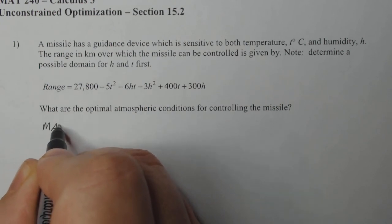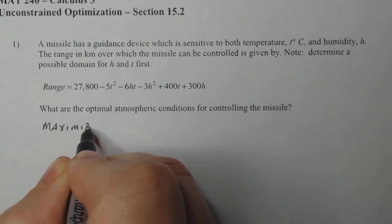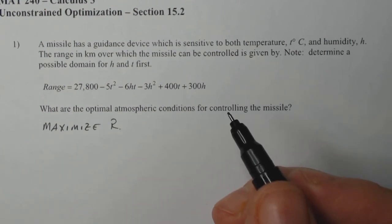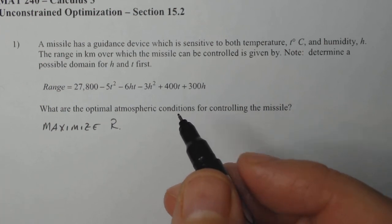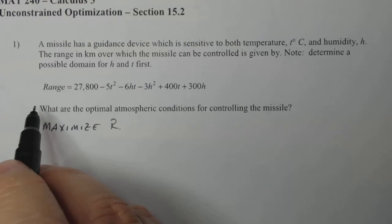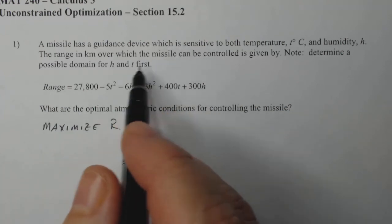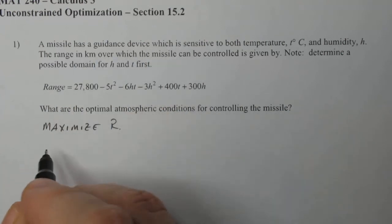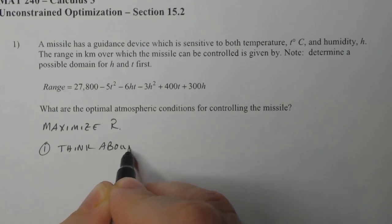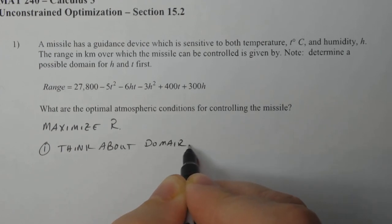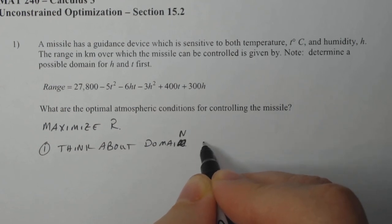All right, so we want to maximize R. In order to find the maximum R, we do have to have critical points and endpoints. And since we don't have a constraint, it is a good idea to talk about a possible domain that can be restricted by our context. So step one, let's just think about the domain of R.